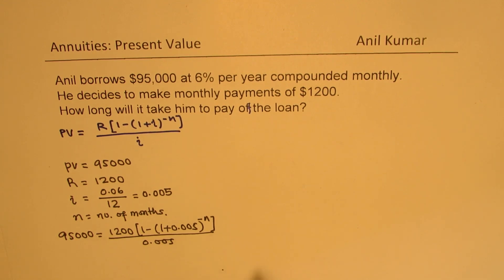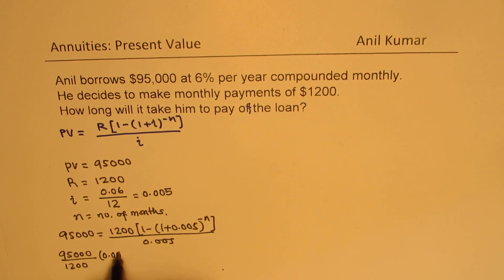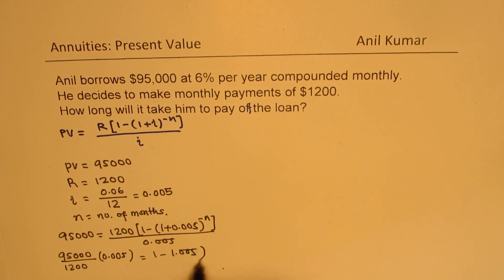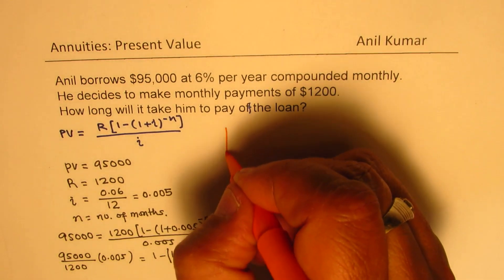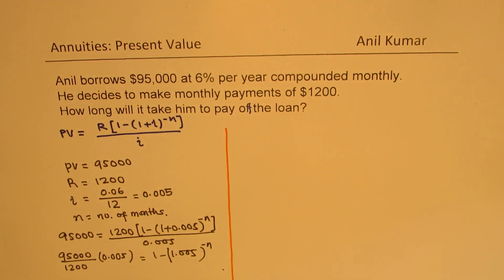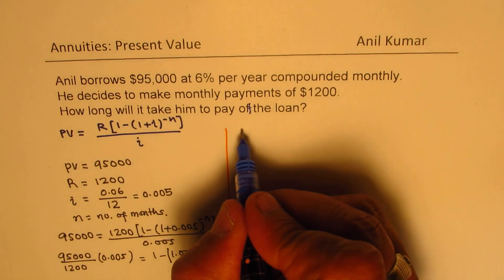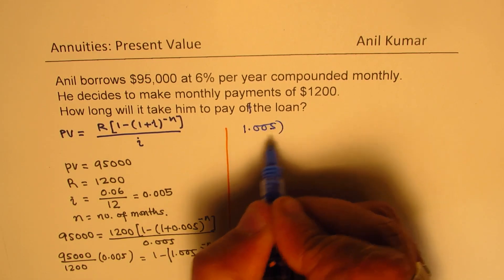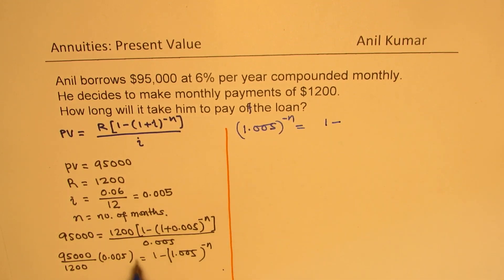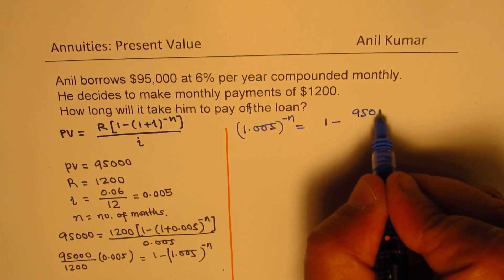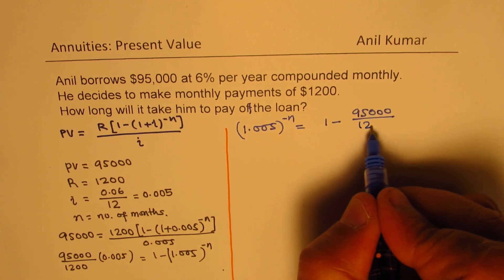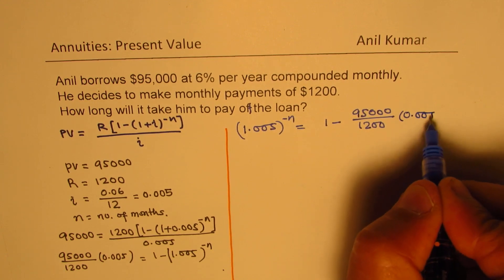So first step, we can cross multiply. We get 95,000 over 1,200 times 0.005, which equals 1 minus 1.005 to the power of minus n. We can then take this term to the left side, so we get 1.005 to the power of minus n equals 1 minus [95,000 over (1,200 times 0.005)].